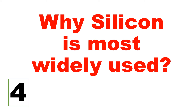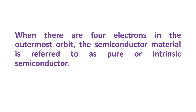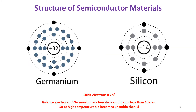Hello all, let us see why silicon is most widely used. When there are four electrons in the outermost orbit, the semiconductor materials are referred to as pure or intrinsic semiconductors. Let us see the structure of semiconductor materials — here we have shown the germanium and silicon atomic structure.